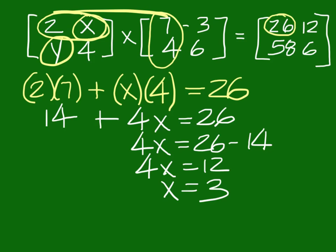So when we go to the Y, we can use this and go back to this column. If I use row 2 and column 1, what number does that pertain to in the answer matrix? If I were to multiply those together, which number do I get in that last matrix? What's in row 2, column 1 of the answer matrix? 58.